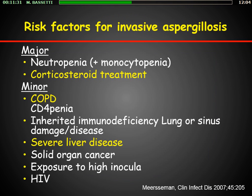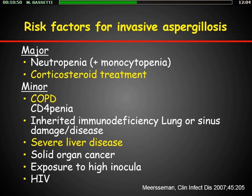Use of steroids is a really important risk factor. We have the risk factors for invasive aspergillosis: obviously neutropenia — more for hematological patients — and corticosteroid treatment. The minor risk factors include COPD, though in the majority of cases COPD patients are also treated with corticosteroids, making it difficult to define whether the risk factor relates to the COPD disease itself or the use of steroids. Another important risk factor is severe liver disease.